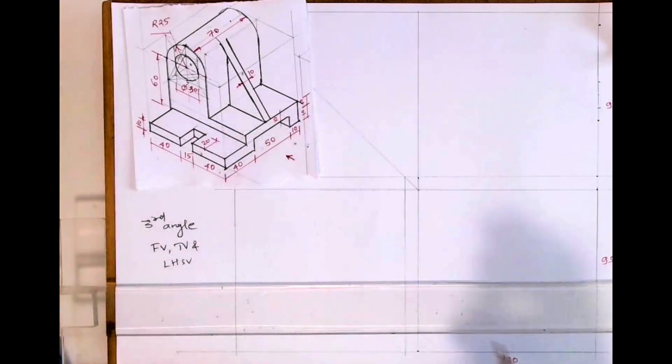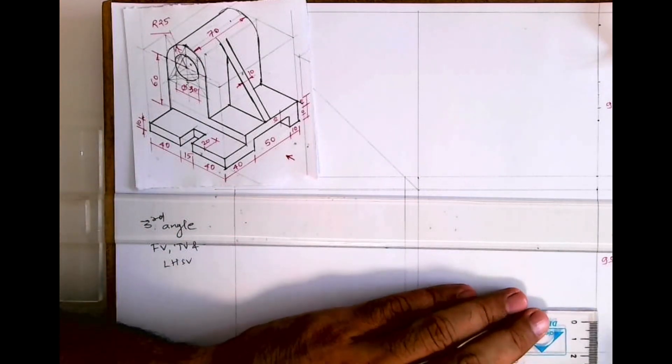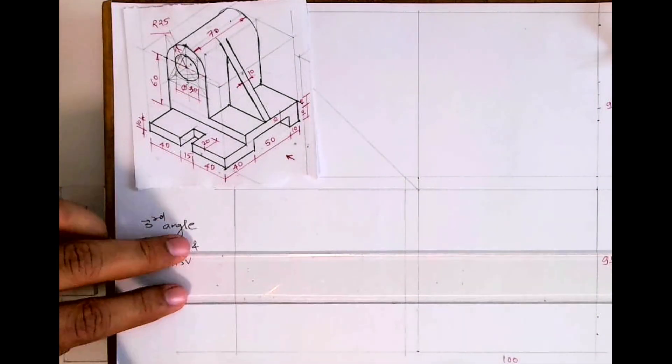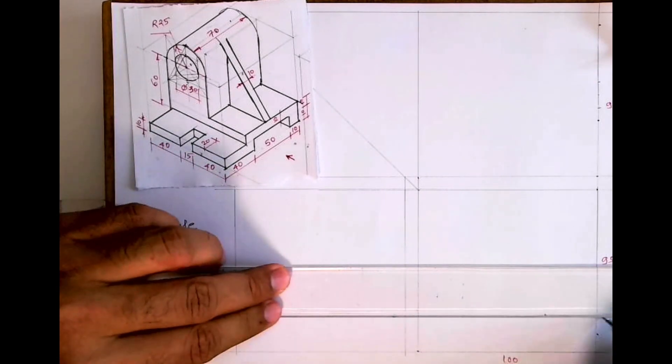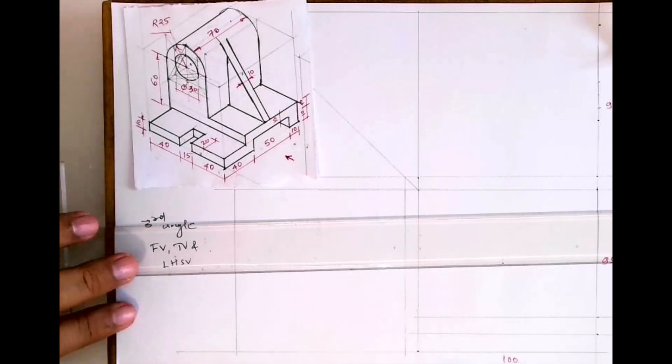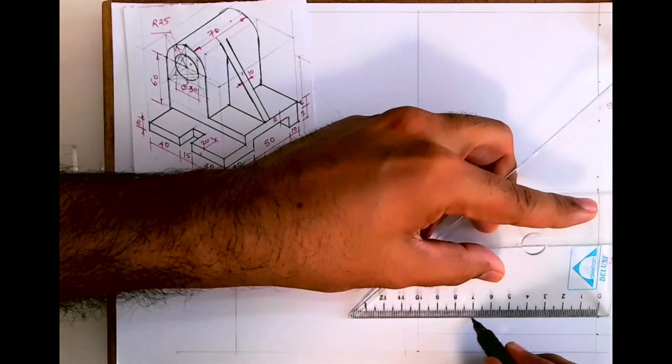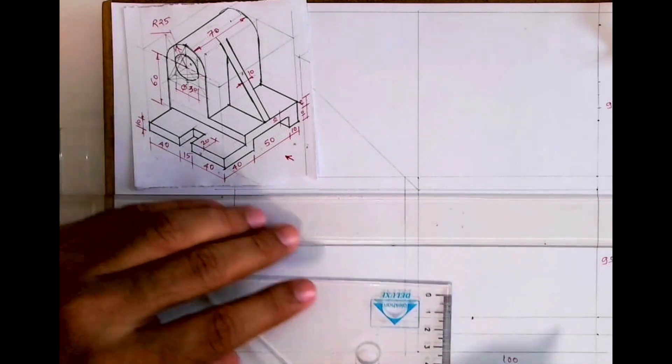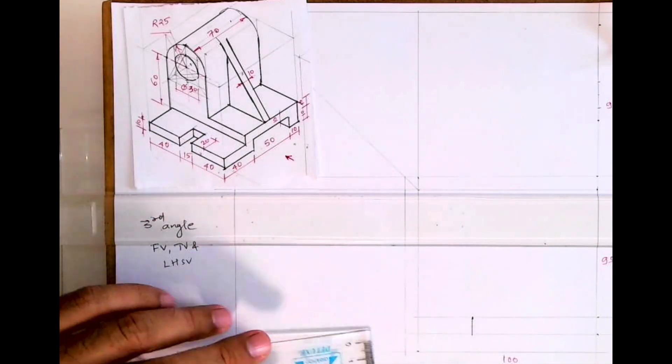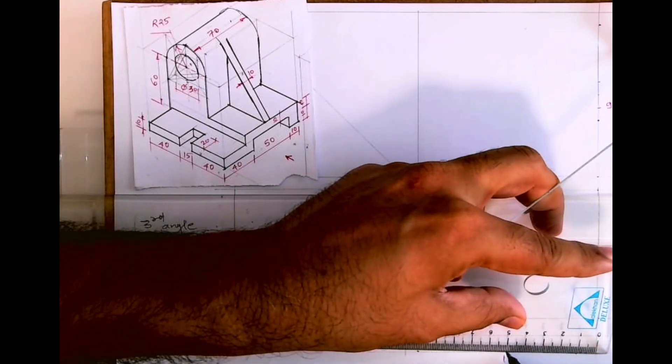First we'll start with this part. Height is 10, so your height is 20 and I'll mark 10 also. Then I'll draw horizontal line. Now I know this distance is 70, so I will take 70 and I will draw vertical line. This is 10, then you take 50.